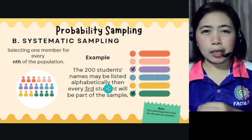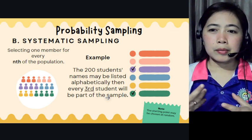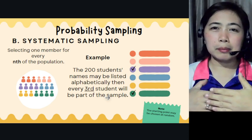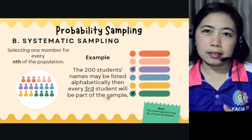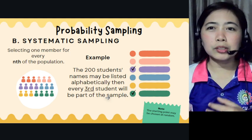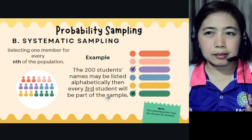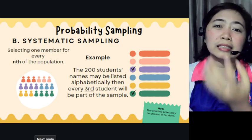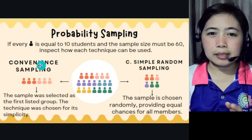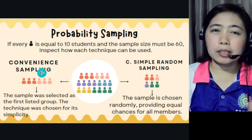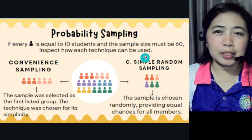You can also do every first or every second. If someone asks why certain students were chosen and others were not, you can explain the system being followed — there is no favoritism, just a system. Convenience sampling is actually for non-probability sampling. The third subtype under probability sampling is simple random sampling, where the sample is chosen randomly, providing equal chances for all members.